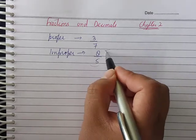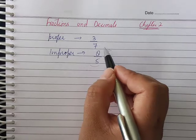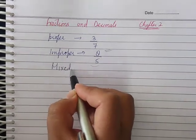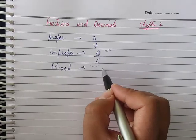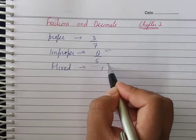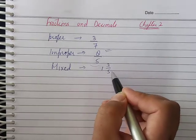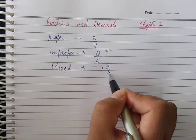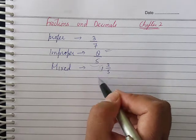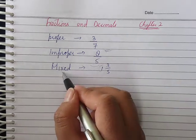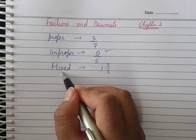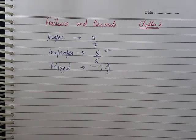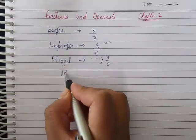A mixed fraction combines a whole number and a proper fraction. For example, 3 by 5 and 4 by 5 are examples used to illustrate proper fractions and the first topic of multiplication of fractions.